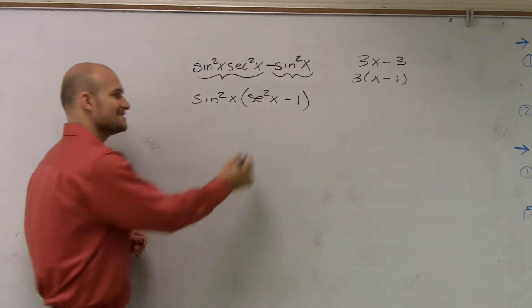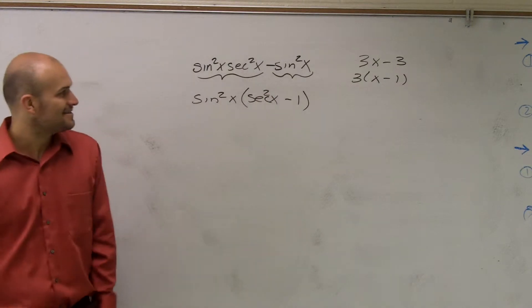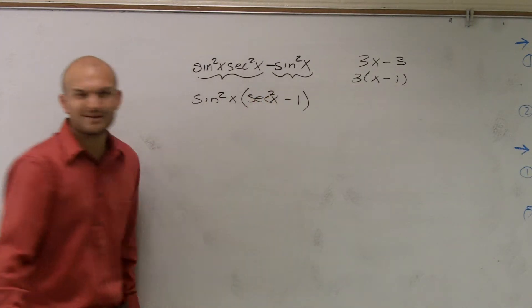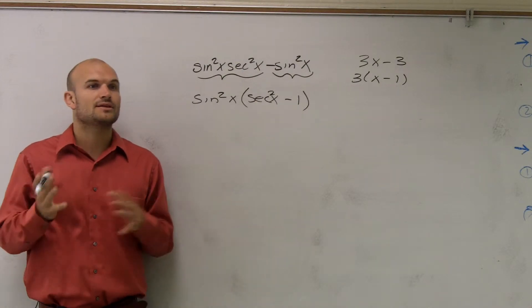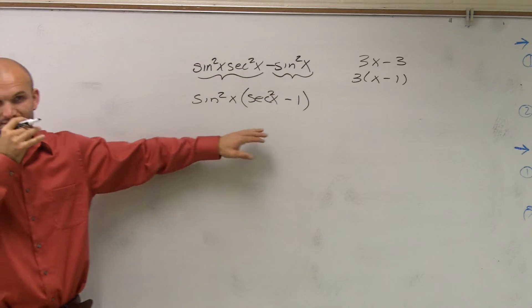You forgot the c. Yes, I did forget the c. Thank you. So it would be a secant squared of x. But does everybody see what I did? OK? So when you're given an opportunity, that's something that you're going to be able to do. Miranda, could you please put that down and look up here, please?